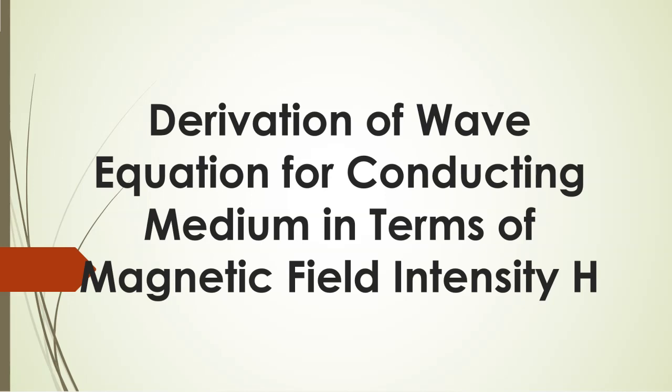Hello friends. Today we will discuss and derive the wave equation for a conducting medium in terms of magnetic field intensity H. Yesterday we discussed and derived the result for electric field intensity. A conducting medium, as I told you in yesterday's lecture, means a medium where volume charge density is zero.